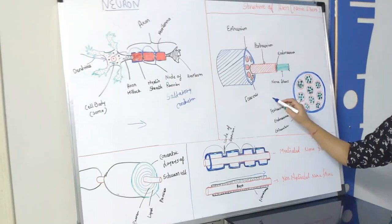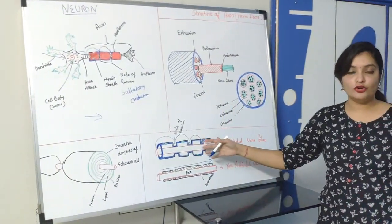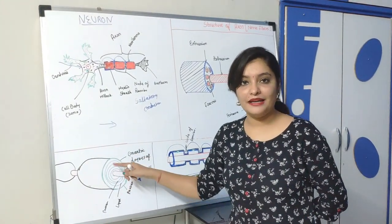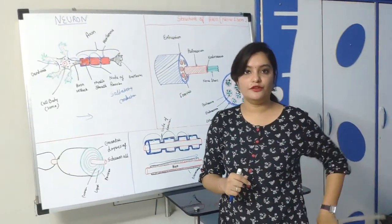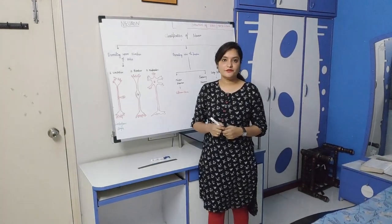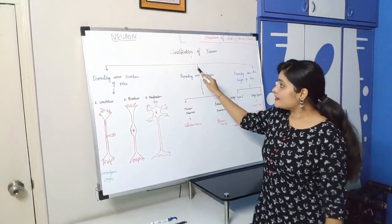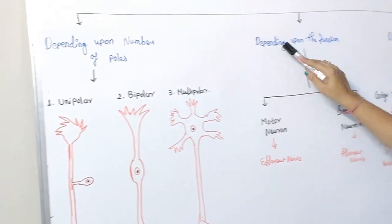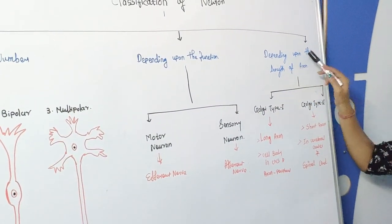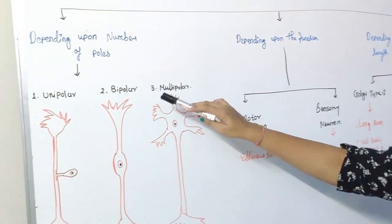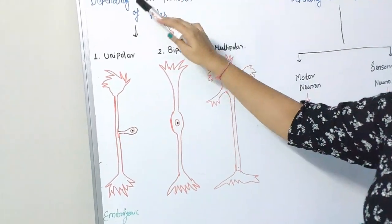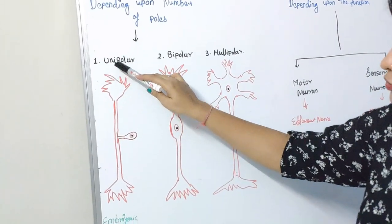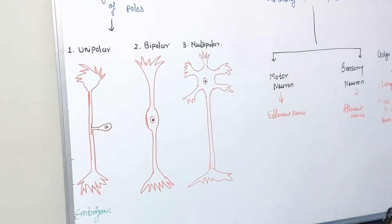I hope you are clear with this axon — the structure of axon, the covering layers of nerve fibers, myelinated axon, non-myelinated axon, the formation of the myelin sheath, and the function of myelin sheath. Now we will see the classification of neurons. Neuron is classified into three categories: first depending upon number of poles, second depending upon the function of neuron, and third depending upon the length of the axon. According to number of poles, the neurons are divided into three: unipolar neuron, bipolar neuron, and multipolar neuron.